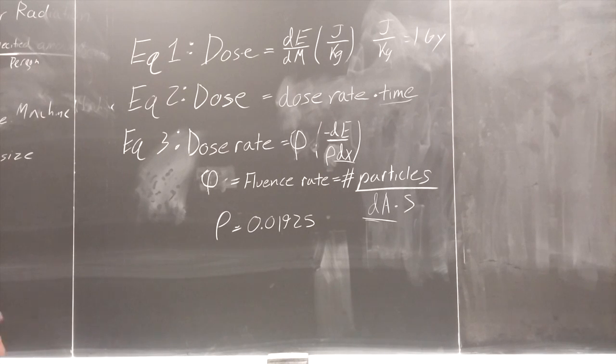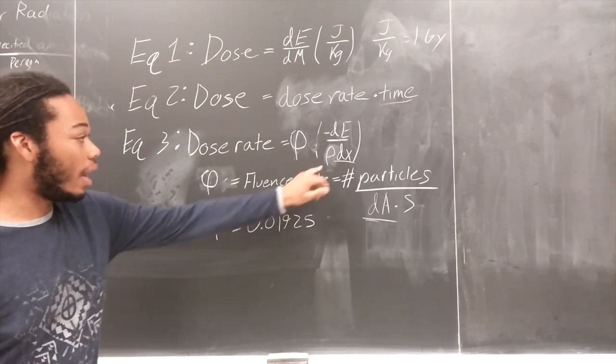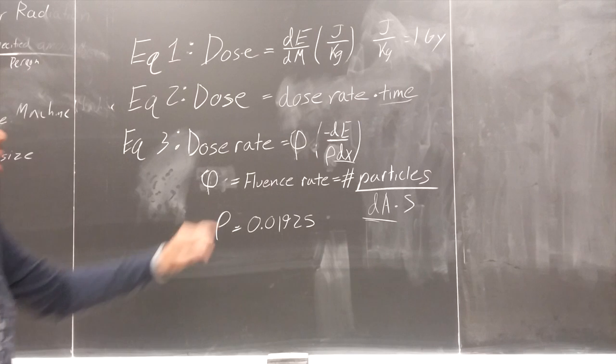Now, by adjusting the dimension of the source, dX, dA, the energy, dE, and time, you can figure out how much exactly is in each dose from the machine. And that will be proven in our experiment in the next section.